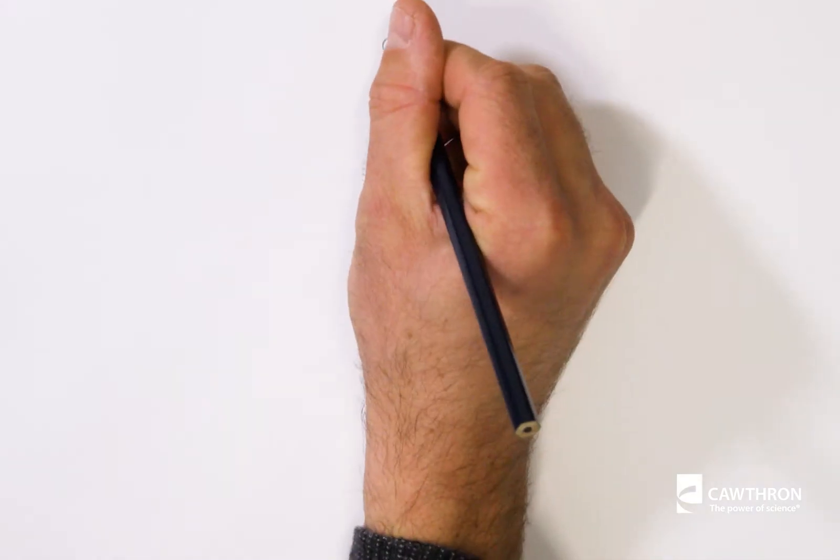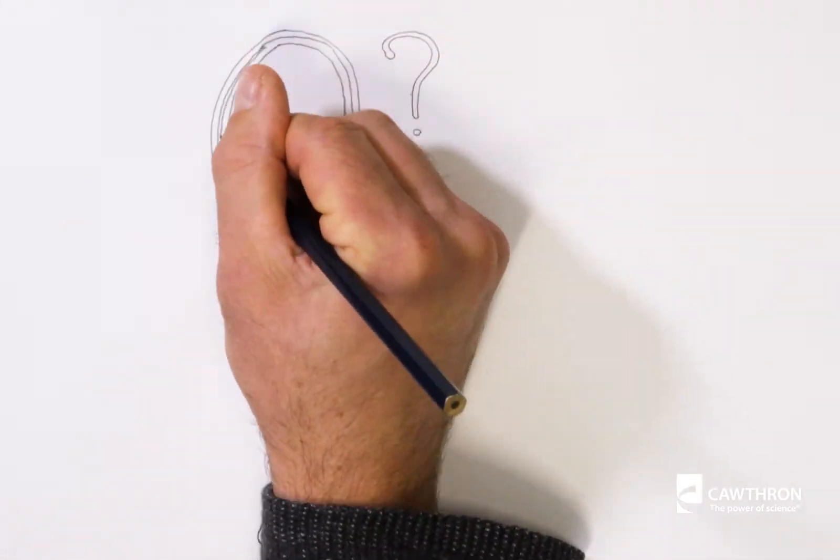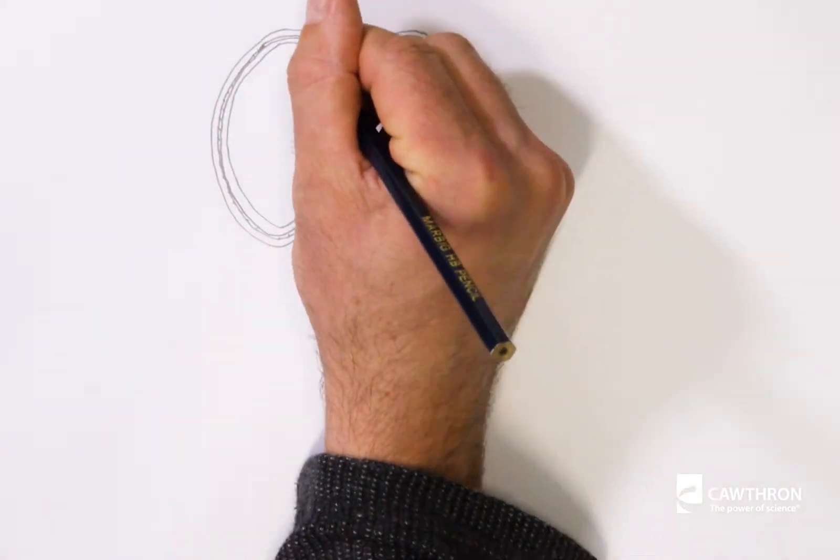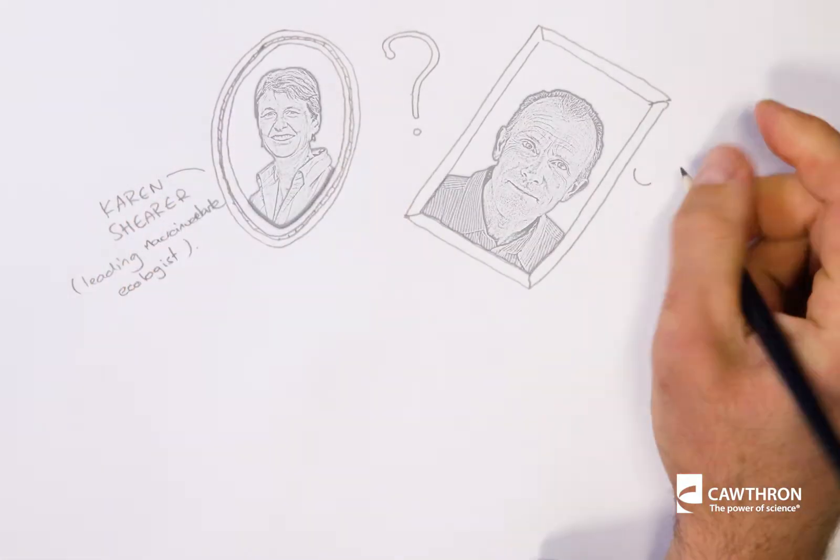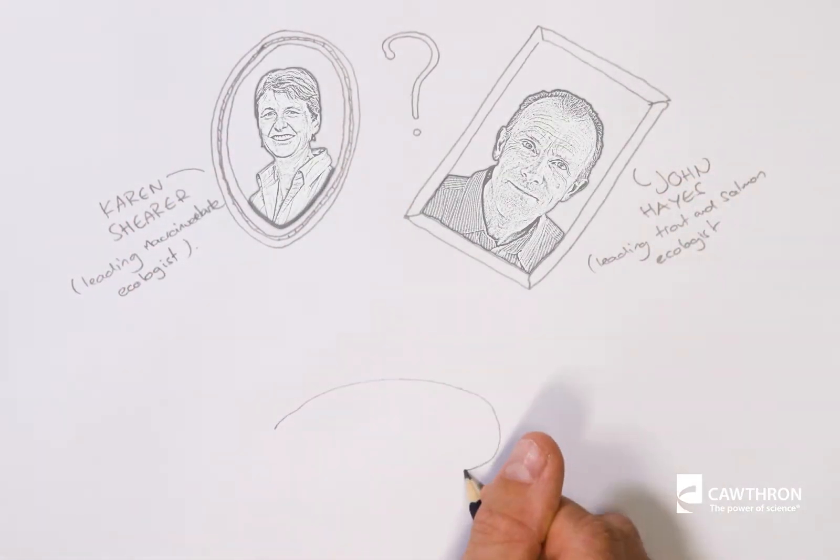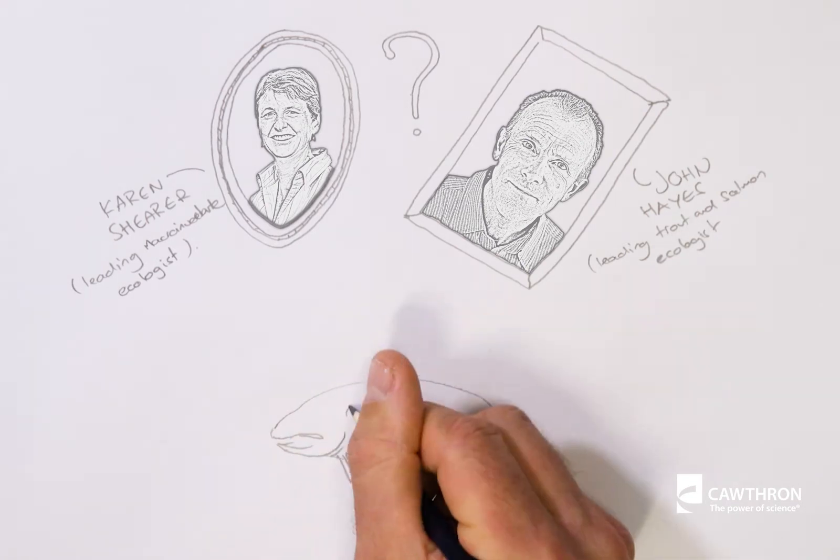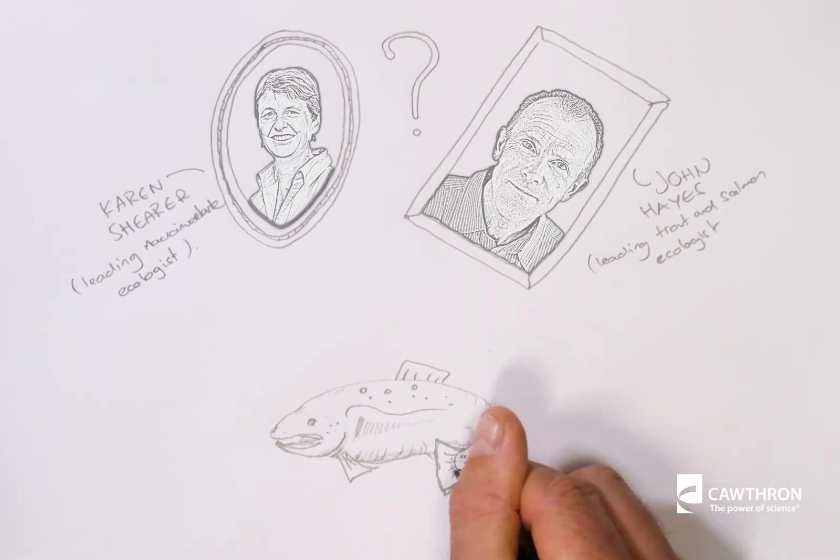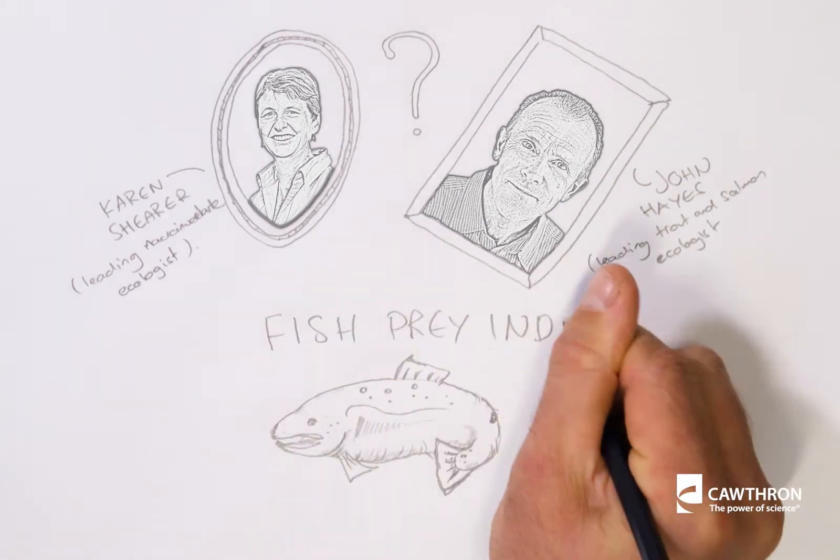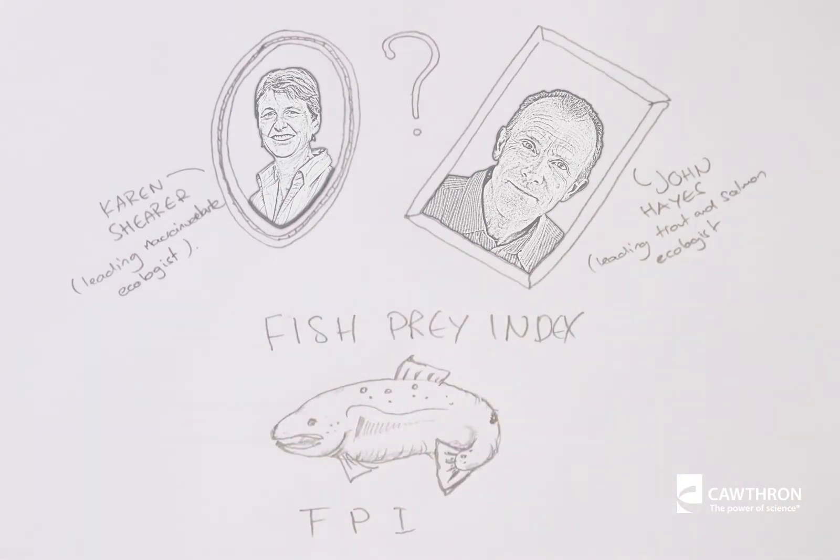So how else can we use this simple concept and these fascinating creatures to learn more about the state of our rivers and streams, and the values that they support? Well, Karen Shearer and John Hayes got together to create a macroinvertebrate community index that rates a river not in terms of nutrient enrichment, but rather, and more specifically, by how well the community can pass energy from plants onto fish. Or, in other words, a fish prey index.